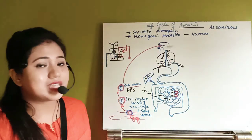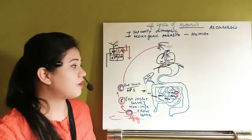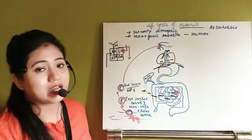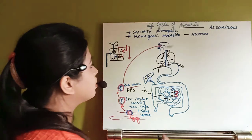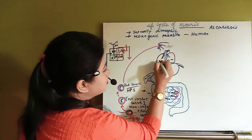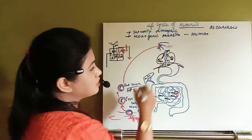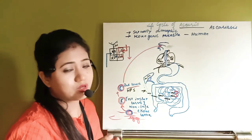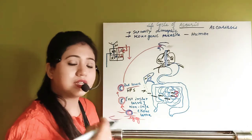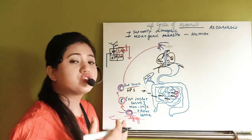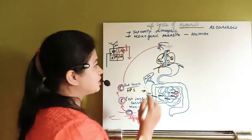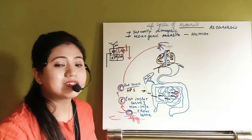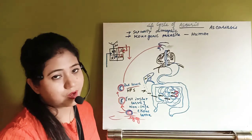The same second instar larva now goes to the lungs, where it transforms into the third instar larva. Inside the alveoli — the air sacs of the lungs — the third instar larva metamorphoses into the fourth and final larval stage, the fourth instar larva.